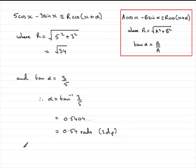So what does this mean? We can summarize and therefore say that 5 cos x minus 3 sin x is identical to, well, R cos(x + α). Just insert the R and the α and you've got the square root of 34 multiplied by the cosine of x plus 0.54 radians.